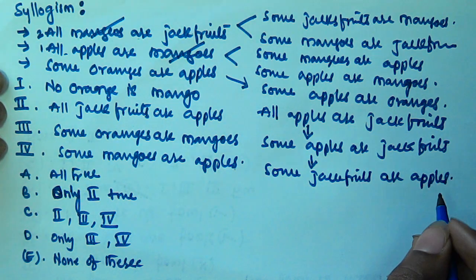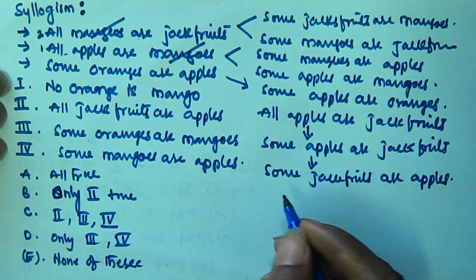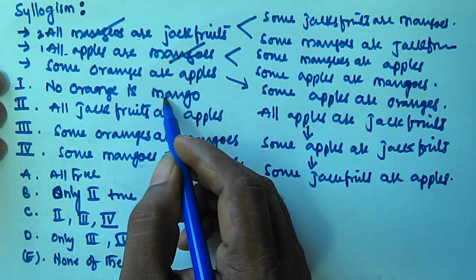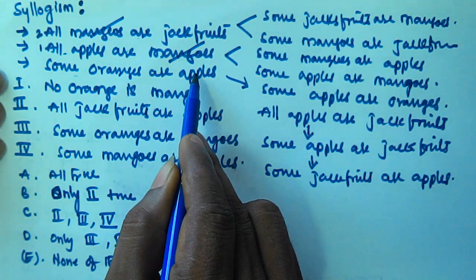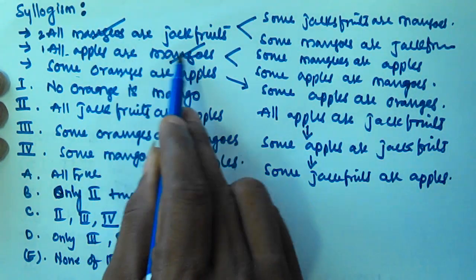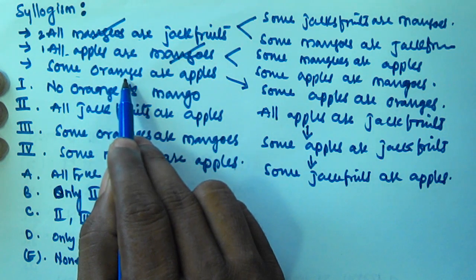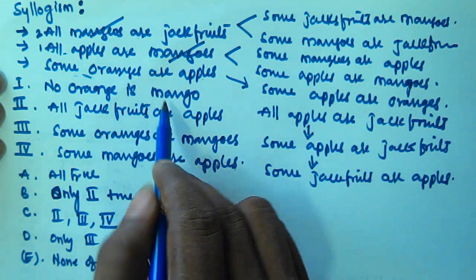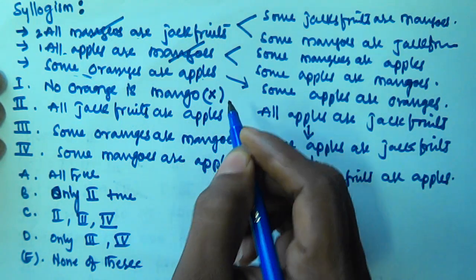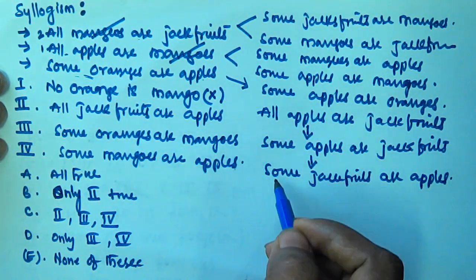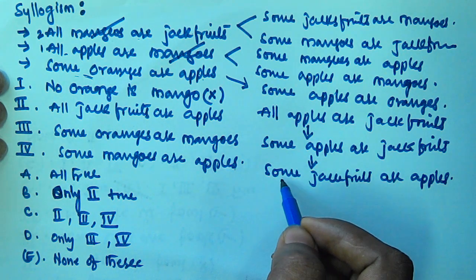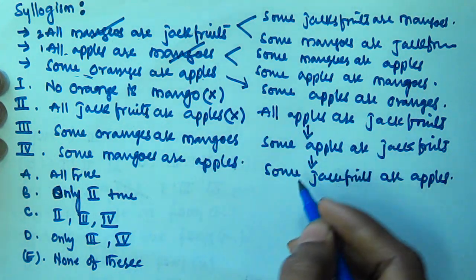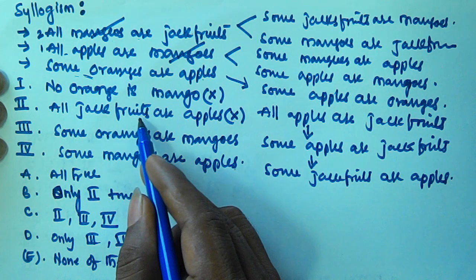Now let's check the conclusions. First: no orange is a mango. But observing 'some oranges are apples' and 'all apples are mangoes', substituting gives us some oranges are mangoes — so we cannot say no oranges are mangoes. This one is false. Second: all jackfruits are apples. We only derived some jackfruits are apples, not all. So this one is also false.